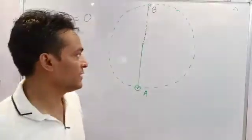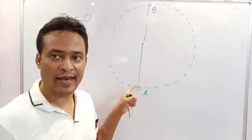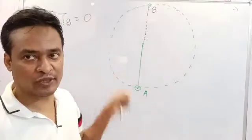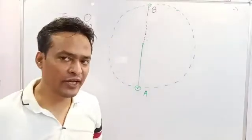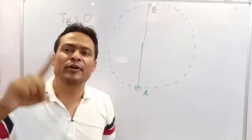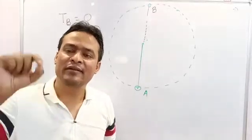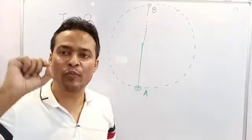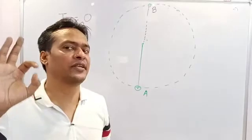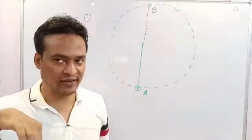The lowest point minimum velocity can be given for a complete circle. The condition is that the body can complete one complete rotation if and only if the tension becomes zero at the topmost point, not before that. If the tension becomes zero before that, the body will not complete the cycle.